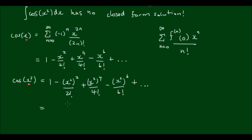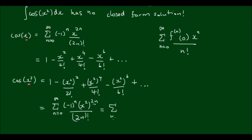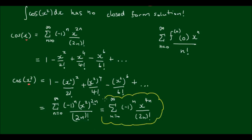Expressed explicitly, the Maclaurin series for cos(x²) is the sum from n equals 0 to infinity of negative 1 to the power of n times (x²) to the power of 2n all over 2n factorial. Taking the index into the parentheses, this simplifies to the sum from n equals 0 to infinity of negative 1 to the power of n times x to the 4n divided by 2n factorial. This is the Maclaurin series for cos(x²), and it's in a form we can integrate.